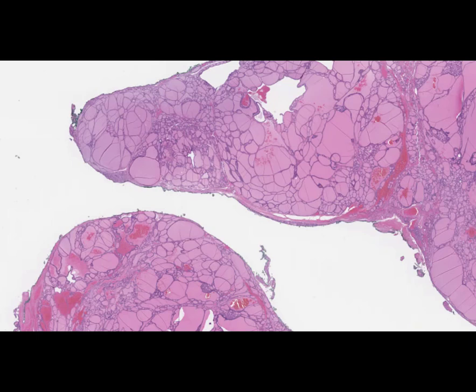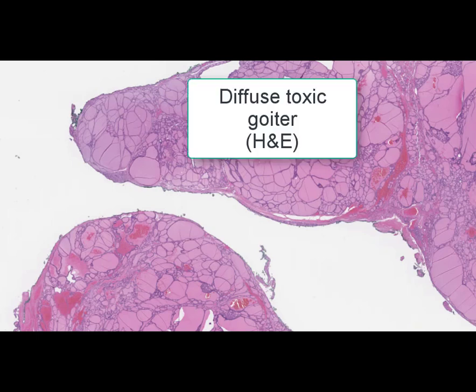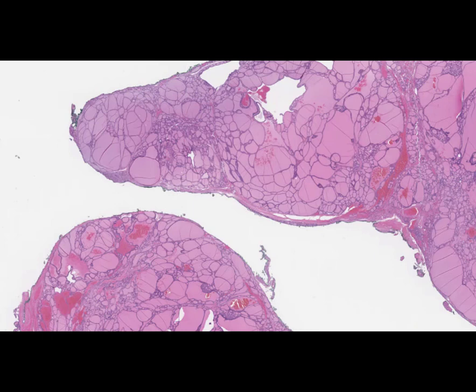On this slide we can see a thyroid gland, stained by hematoxylin and eosin. The name of this slide is diffuse toxic goiter. By definition, goiter is an enlargement of the thyroid gland. It can be diffuse or nodular, and it can be accompanied by increased or decreased functionality of the thyroid gland.